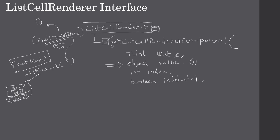If focus is on the third item, isSelected tells us whether the item is selected. So if this method is called for the second item, isSelected will be set to true. Similarly, the hasFocus parameter tells whether the cell has focus. For an item that has focus but is not selected, we will get false for isSelected and true for hasFocus. When you override getListCellRendererComponent you receive all these parameters and can use them to paint the individual list items.